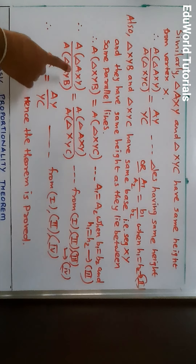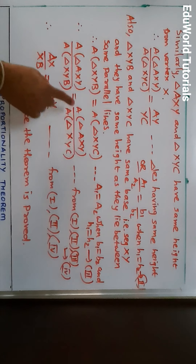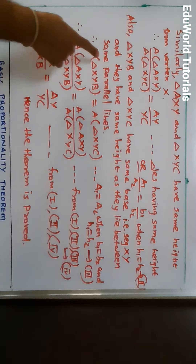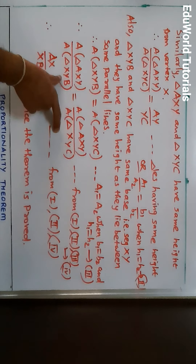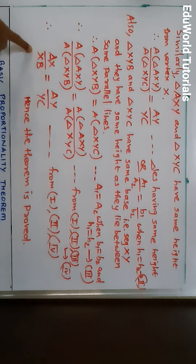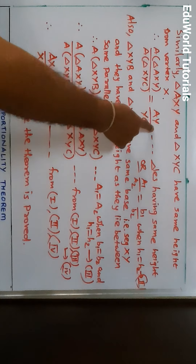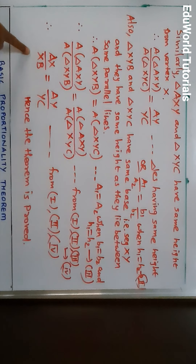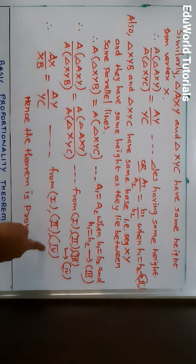See very carefully — these two ratios are equal because the numerators are equal and the denominators are equal, as shown. The value of the first ratio is AX upon XB and the value of the second ratio is AY upon YC. So these two ratios are equal, and that is exactly what we had to prove. From Results 1, 2, and 4, the theorem is proved.